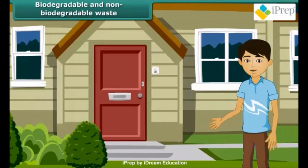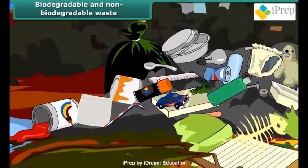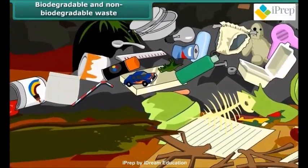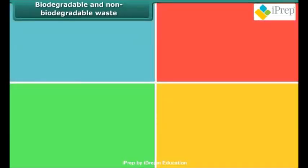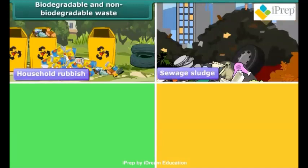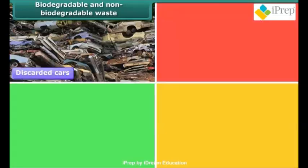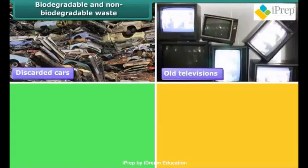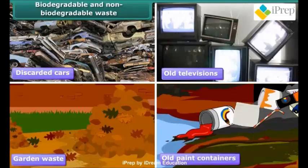Our daily activities give rise to a large variety of wastes arising from different sources. Garbage or waste consists of items which are unwanted materials. Many items can be considered as garbage, for example household rubbish, sewage sludge, wastes from manufacturing activities, packaging items, discarded cars, old televisions, garden waste, old paint containers, etc.